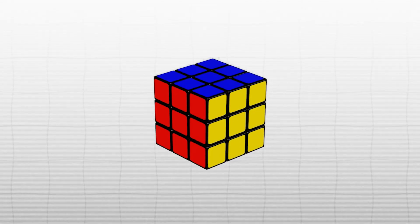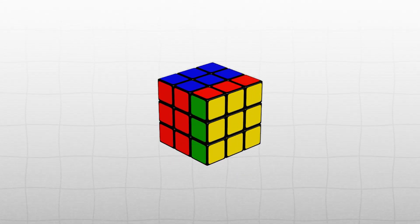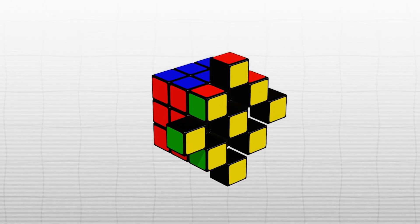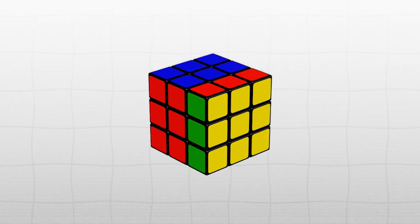Firstly, if you turn, let's say, this right side, that affects four different corners and edges, which is a lot of pieces to keep track of.